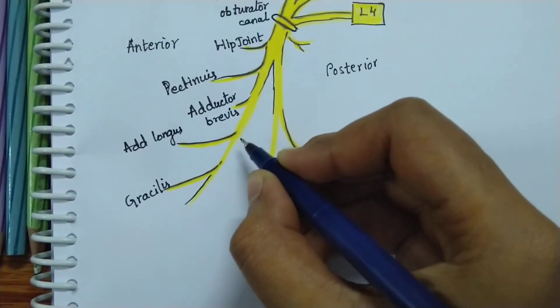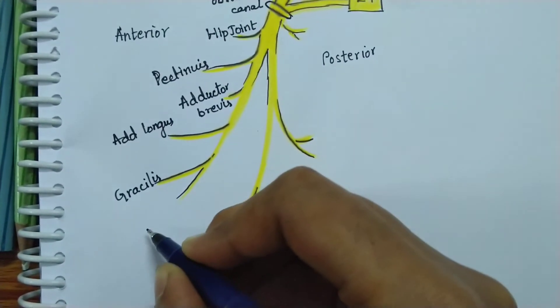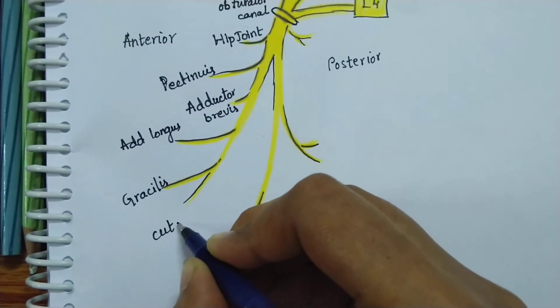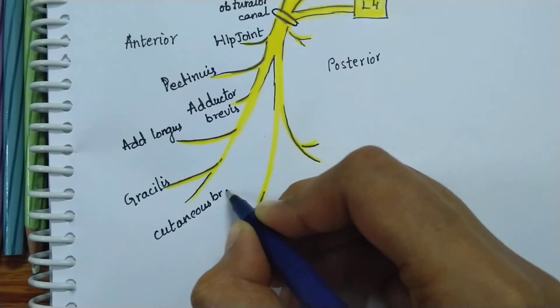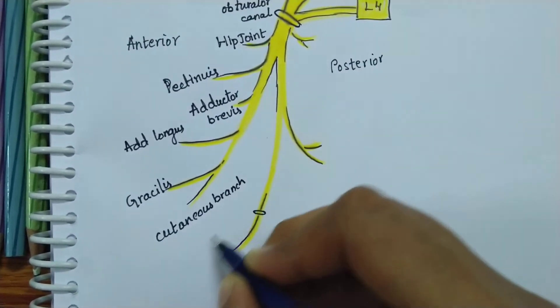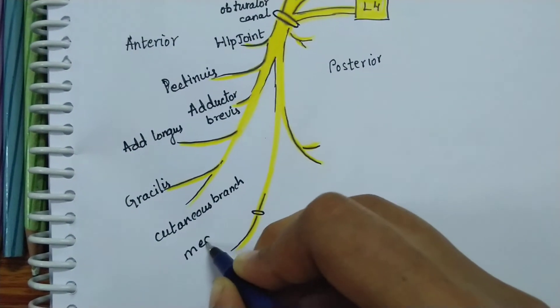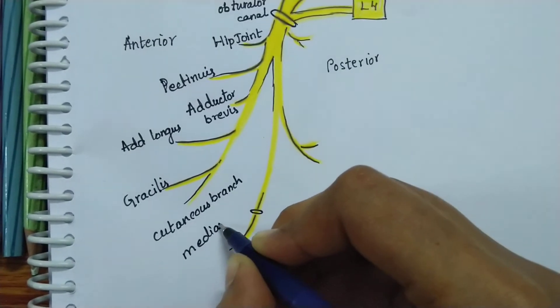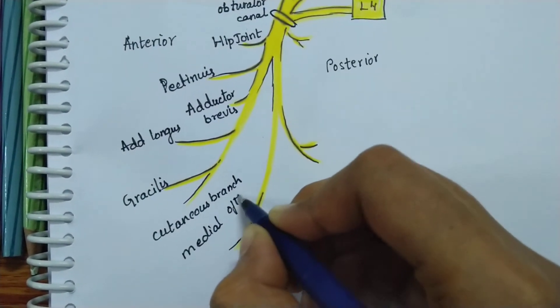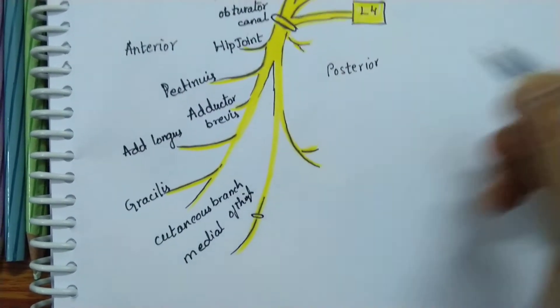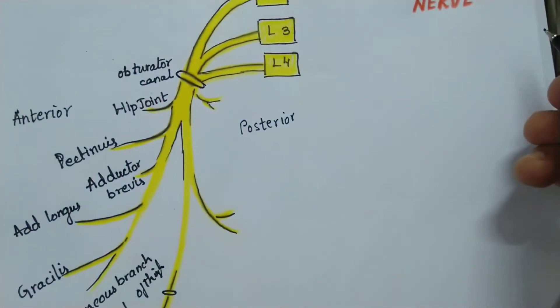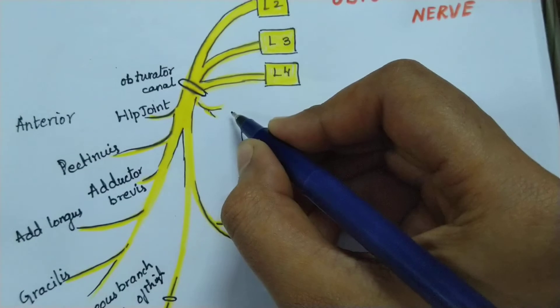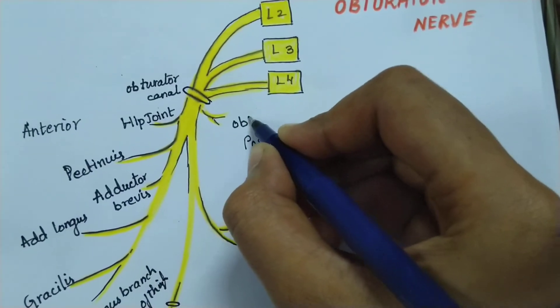Then the anterior division continues as the cutaneous branch which supplies the medial aspect of the thigh. Now coming to the posterior division or the main trunk, it supplies the obturator externus muscle.